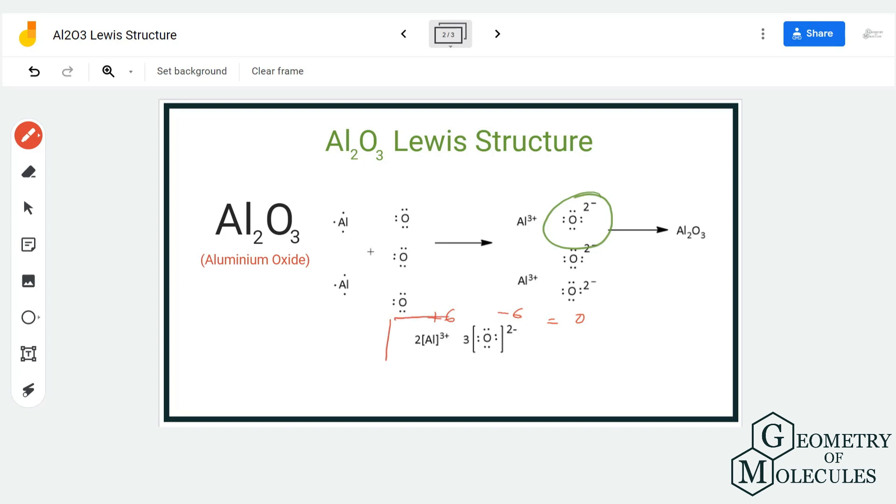And this is the Lewis structure, or this is how you write a Lewis structure for Al2O3. However, you should remember that as it is an ionic compound, this is just one unit and it kind of repeats itself in the molecule or in the crystal.